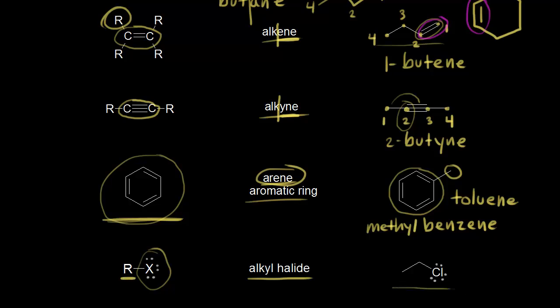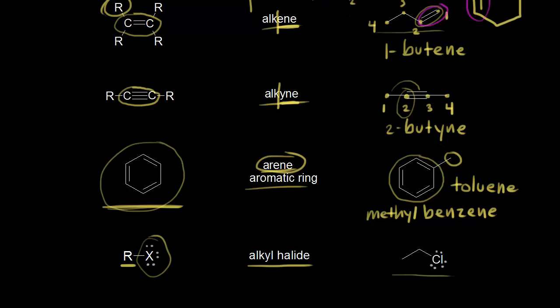For the example on the right, let me get a little more room down here. Our halogen is chlorine, and our alkyl group here would be an ethyl group. We have a CH2 and a CH3. So one possible name for this molecule would be ethyl chloride. We could also call this chloroethane.